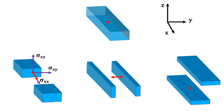At point O, the stress on the second cross section will have three components: sigma-yx, sigma-yy, and sigma-yz. Similarly, for the third cross section, if the area vector is in the z direction, the stress at point O will have three components: sigma-zx, sigma-zy, and sigma-zz.